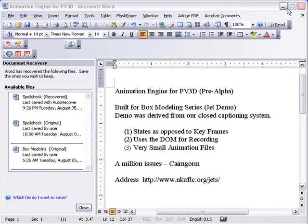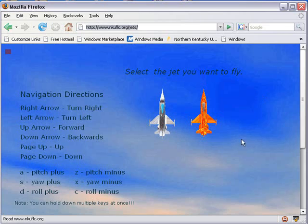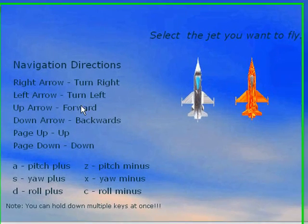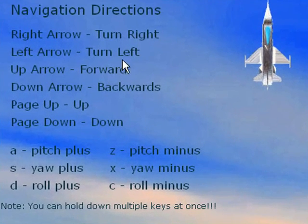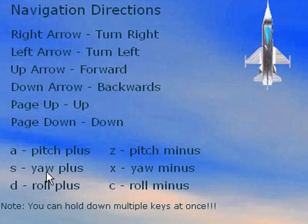Let's go ahead and take a look at the demo right now. So here it is — you'll get this screen. You can see there are some directions here: right arrow to turn right, left arrow to turn left, forward, backwards, up and down. A is pitch, Z is pitch minus, S is yaw plus, X is yaw minus, D rolls, and C minus rolls.